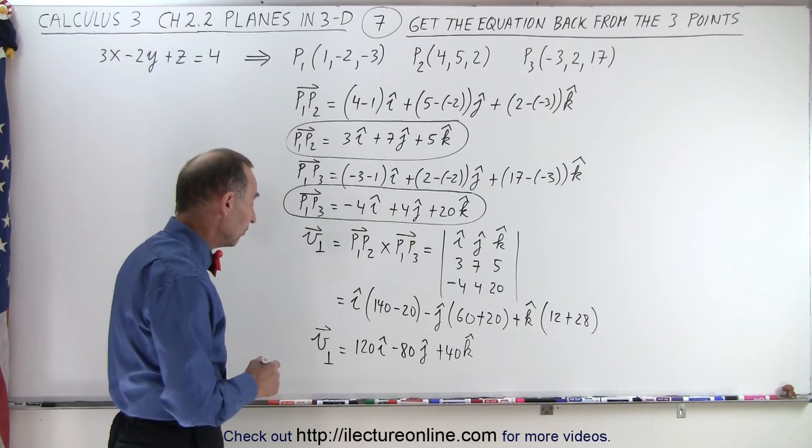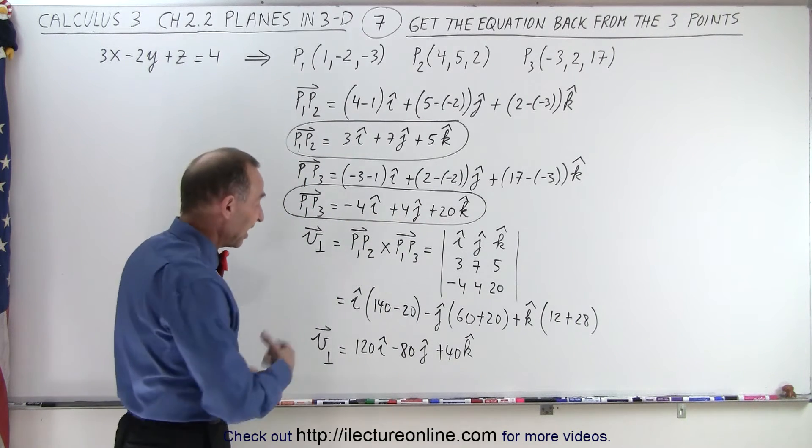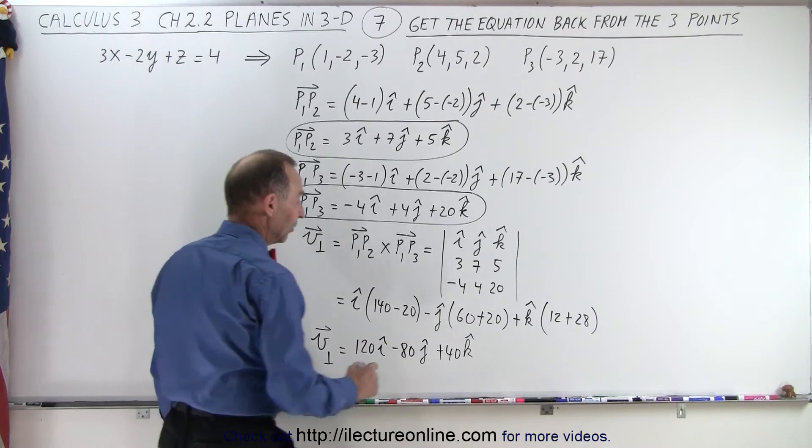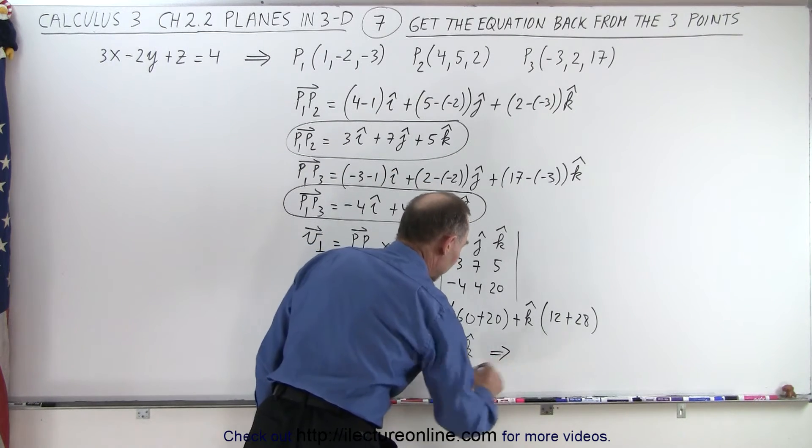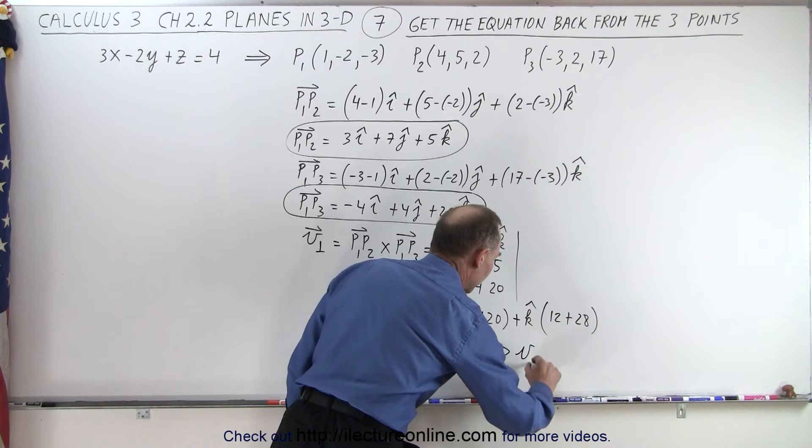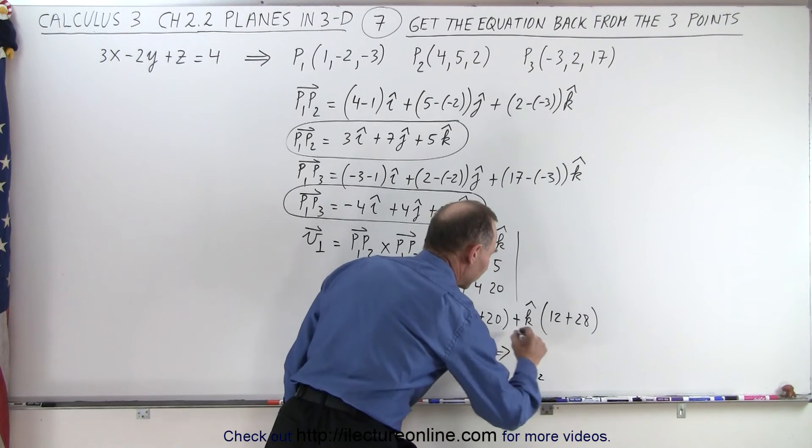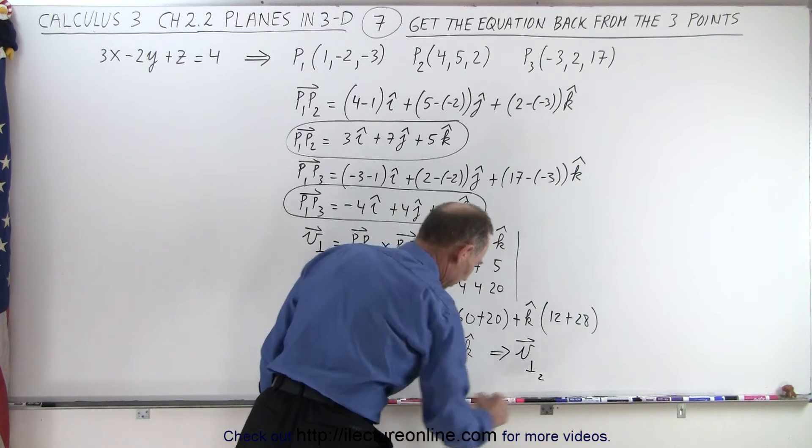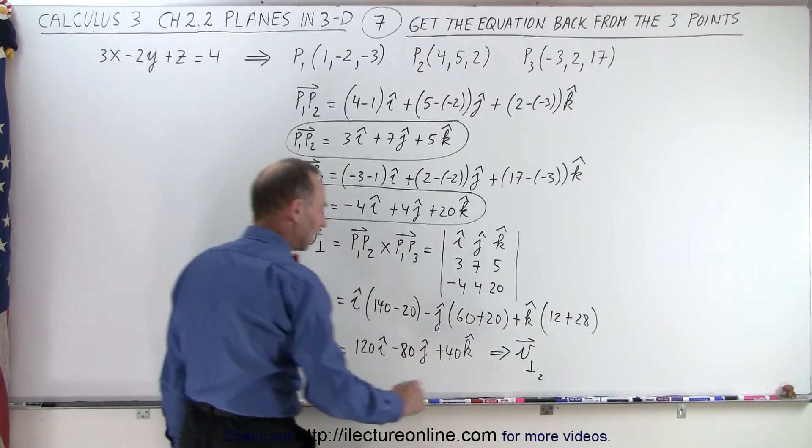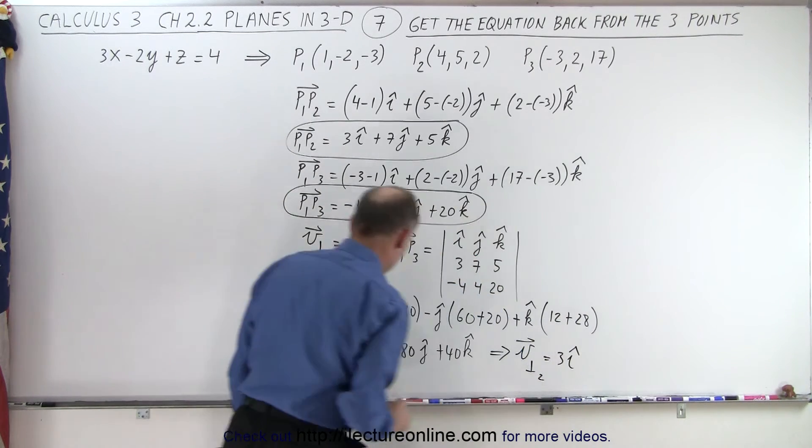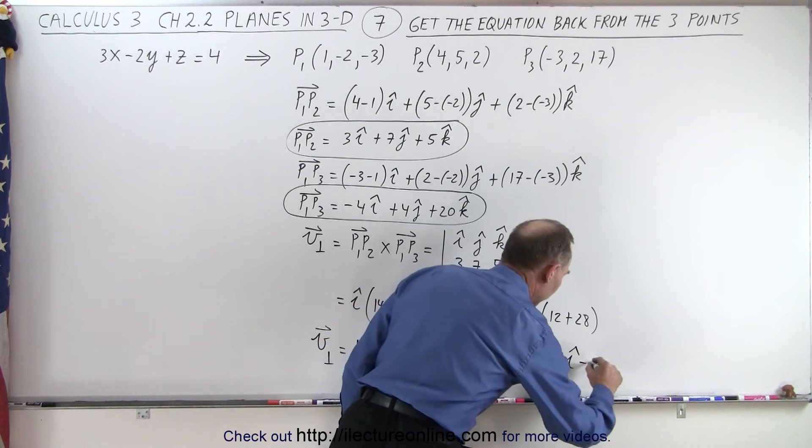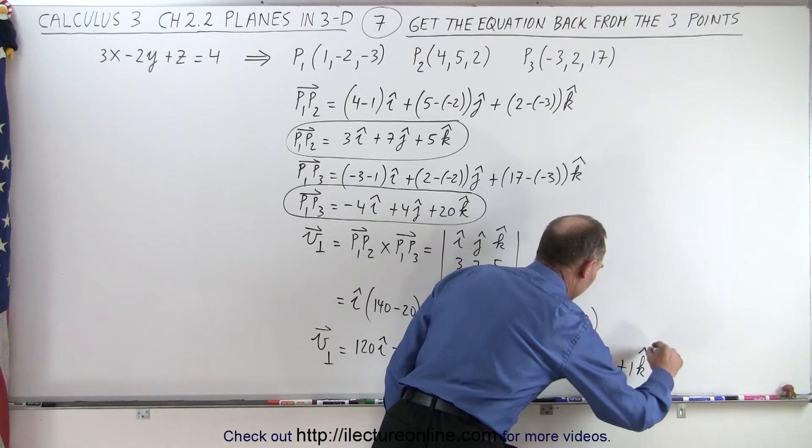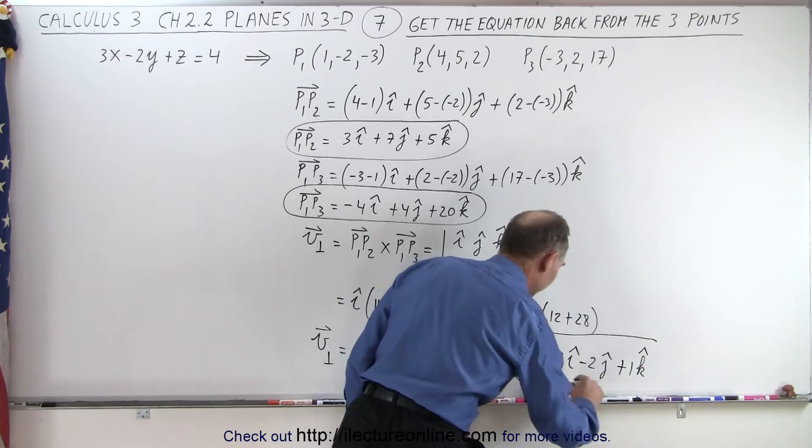Notice that we can define another vector, same direction, by scaling this down a bit, because those are big numbers. So let's divide everything by 40. 120 divided by 40 gives me 3i, and minus 80 divided by 40 is minus 2j, and 40 divided by 40 is plus 1k. And notice that this is a much more convenient vector.